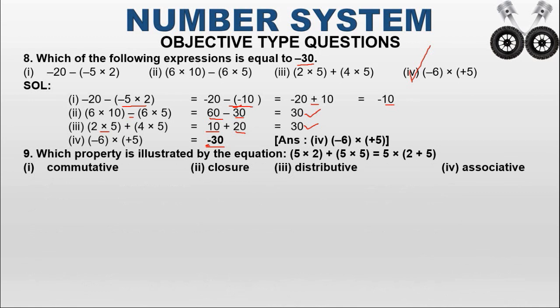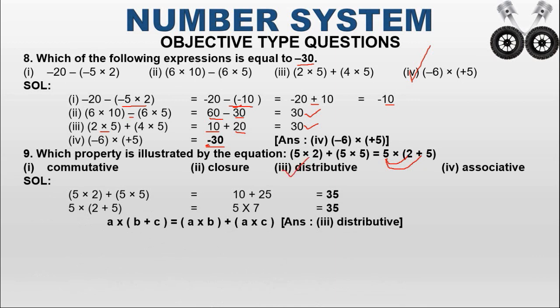Question 9: which property is illustrated by 5 into 2 plus 5 into 5 equals 5 into (2 plus 5)? Here, 5 is distributed to both 2 and 5. This is the distributive property. Verification: 5 into 2 plus 5 into 5 equals 10 plus 25 equals 35, and 5 into (2 plus 5) equals 5 into 7 equals 35. Both are equal, confirming the distributive property. The correct option is 3.